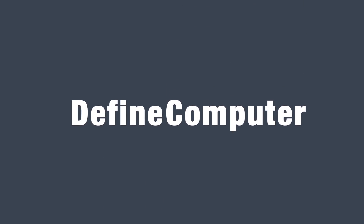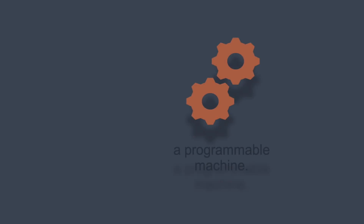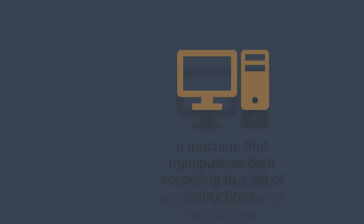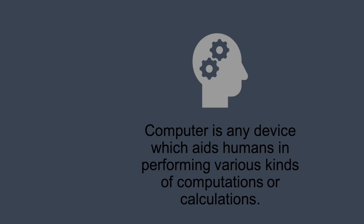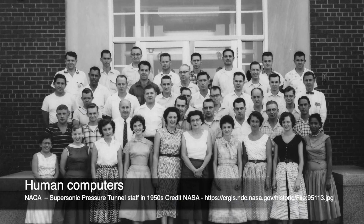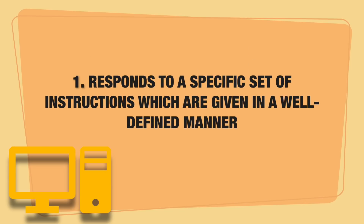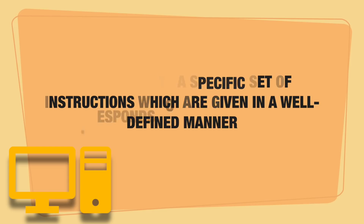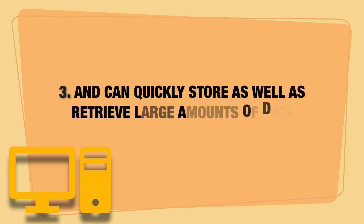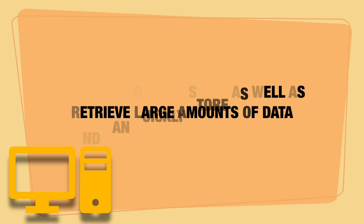Let's first define what is known as a computer. One simple definition is: a computer is a programmable machine. A second definition is it is a machine that manipulates or executes data according to a list of instructions, better known as programs. A computer is also any device which aids humans in performing various kinds of computations or calculations. Key characteristics include: it responds to a specific set of instructions in a well-defined manner, it can execute a pre-recorded list of instructions, and it can quickly store as well as retrieve large amounts of data.